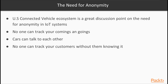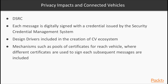With Connected Vehicle technology, cars talk with each other and with infrastructure all the time. DSRC basic safety messages are transmitted once every 10 milliseconds, and each message is digitally signed with a credential issued by the Security Credential Management System, or SCMS. Fortunately, there were design drivers included in the creation of the Connected Vehicle Ecosystem that focused on privacy and anonymity — mechanisms such as pools of certificates for each vehicle, where different certificates are used to sign each subsequent message, are included. There is also privacy embedded in the certificate provisioning process to ensure that the certificate itself cannot be tied to the identity of a vehicle or the vehicle's owner.